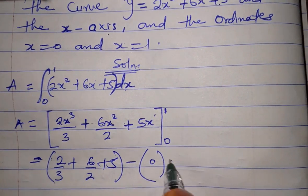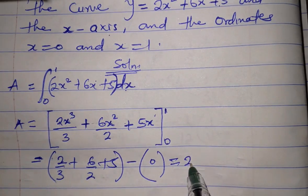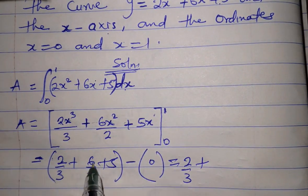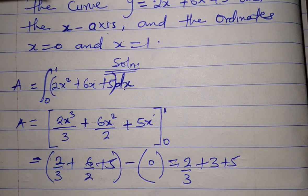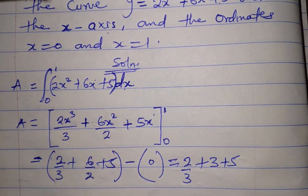So we have 2/3 plus 6/2, which is 3, plus 5. So this is it.